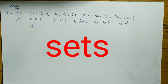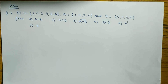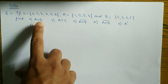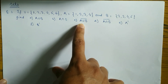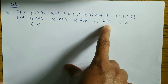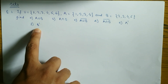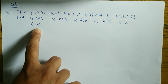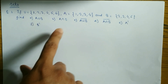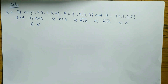If U is equal to {1, 2, 3, 4, 5, 6}, A is equal to {1, 2, 3, 4} and B is equal to {2, 3, 4, 5}. Here we have to find out: A union B, A intersection B, (A union B) complement, (A intersection B) complement, A complement, and B complement. From this video I am going to teach you all of this — how to find out these values.